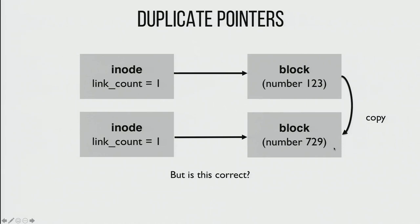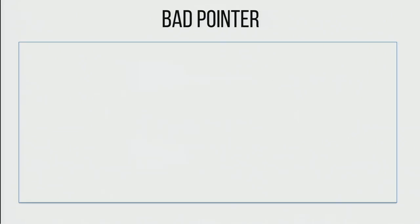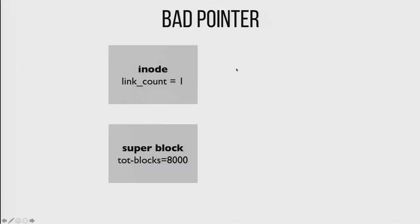And then there's the fairly easy problem of an inode pointing to some data block that's beyond the end of the disk. Even if the data bitmap shows some allocated block not being pointed to, we're not going to infer it was supposed to point there. We just clear that pointer and remove that data block reference.